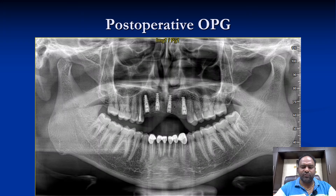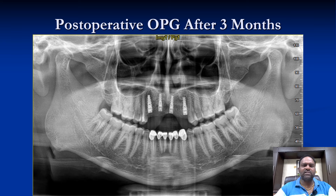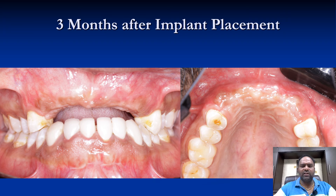We took an OPG and left the patient for another 3 to 4 months for the implants to osseointegrate, before proceeding with the second stage and prosthesis. After three months the patient came back — the implants looked fine, and we proceeded with the second stage.